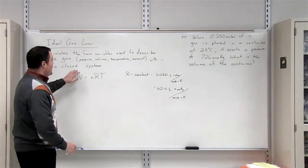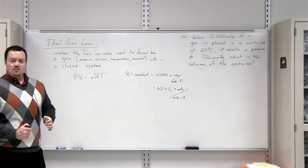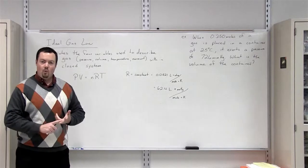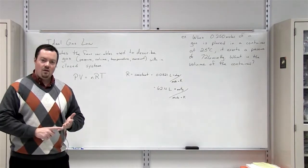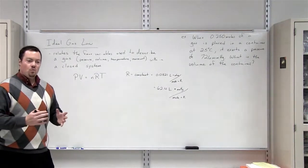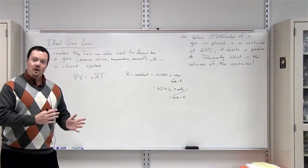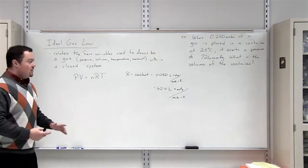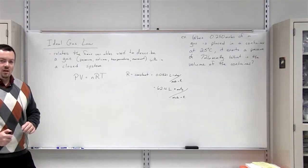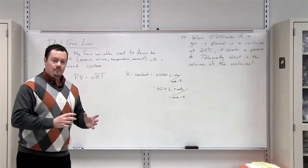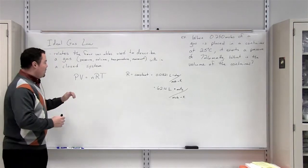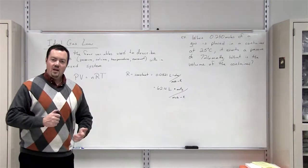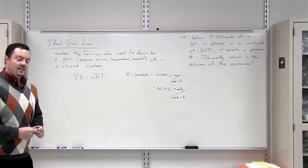And it relates these variables in a closed system. So the ideal gas law works a little bit differently than the combined gas law, Boyle's law, Charles' law, and Gay-Lusac's law. All of those laws deal with an open system where a variable changes or you have multiple conditions that these gases are under. The difference with the ideal gas law is it's a closed system. So the ideal gas law is useful when you're given three of the four variables and you're just asked to solve for that fourth and last variable.